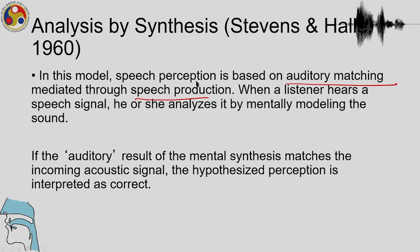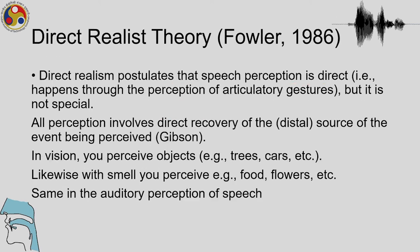When a listener hears a speech signal, he or she analyzes it by mentally modeling the sound. If the auditory result of the mental synthesis matches the incoming acoustic signal, the hypothesized perception is interpreted as correct. Analysis by synthesis is therefore different from motor theory — here the auditory matching is through speech production. This is one of the auditory theories where the auditory part is most important.